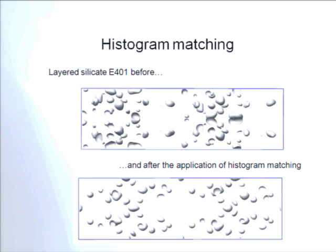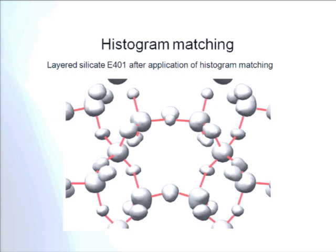For layered silicate EA01, before histogram matching the map is uninterpretable, but after histogram matching the solution is perfect. The structure of zeolite IM-5, with 864 atoms in the unit cell and a large degree of disorder, was too complicated for charge flipping with histogram matching alone, but it could be solved in combination with high-resolution transmission electron microscope data and histogram matching charge flipping — a combination that unifies two worlds. A lecture on this by Christian Baerlocher will follow.